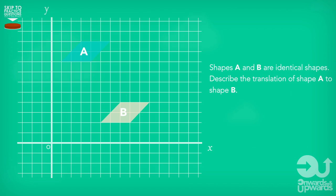So here's another type of question. Shapes A and B are identical shapes. Describe the translation of shape A onto shape B. Now with these questions, all we do here is pick a single point on the shape once again, our famous starting point.